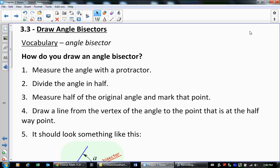3.3 is now instead of drawing perpendicular bisectors, we're going to draw angle bisectors, which is essentially the same concept. We're still dealing with a bisector. Now instead of bisecting a line segment, we're going to bisect an angle. That's the only difference.